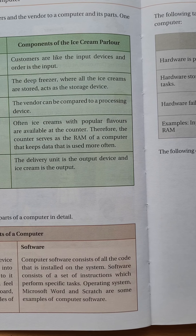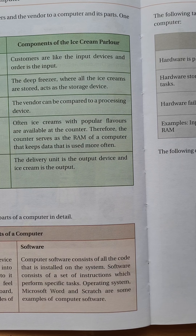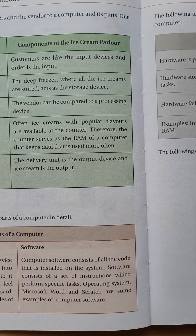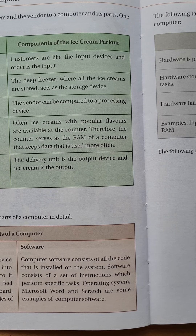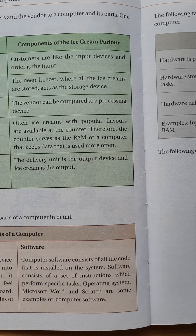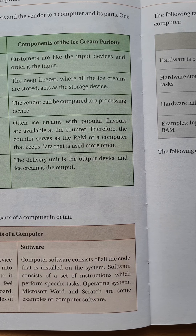Examples of computer software include operating systems like Windows 8, Windows Vista, and DOS. Microsoft Word, Microsoft Excel, and Scratch are also examples of computer software.